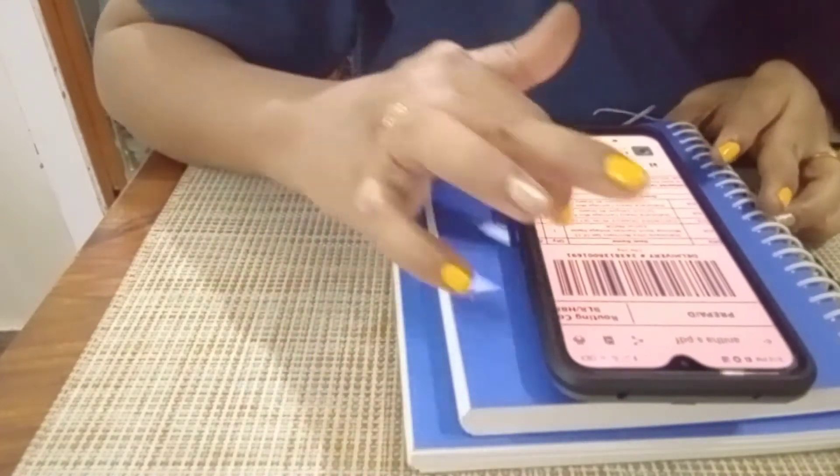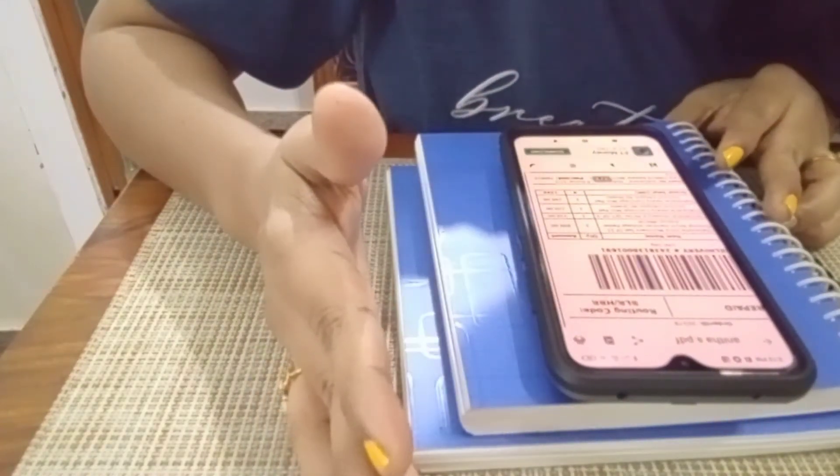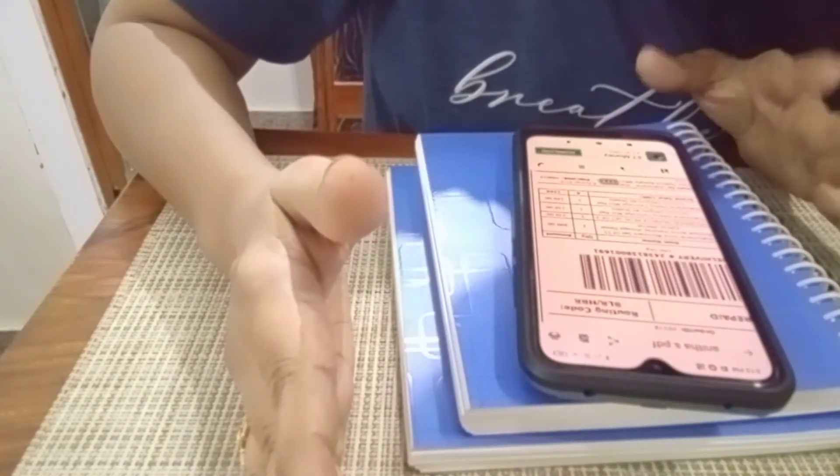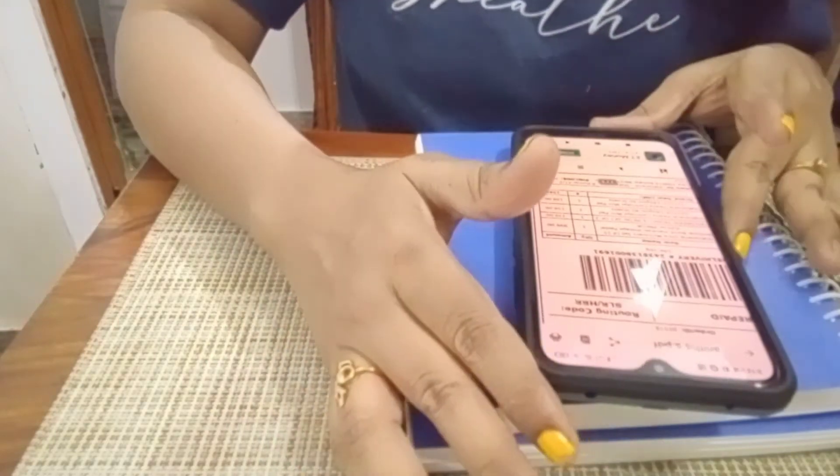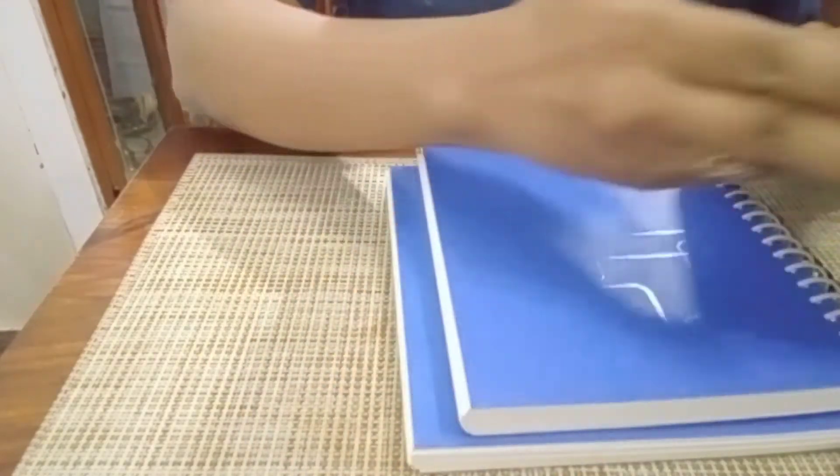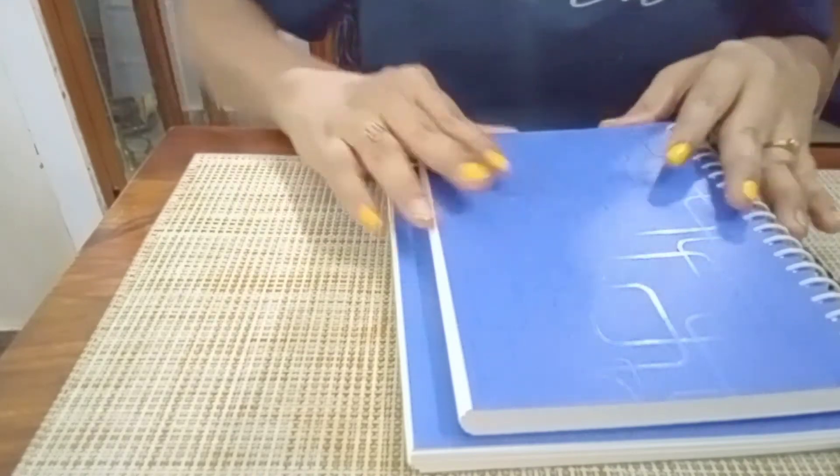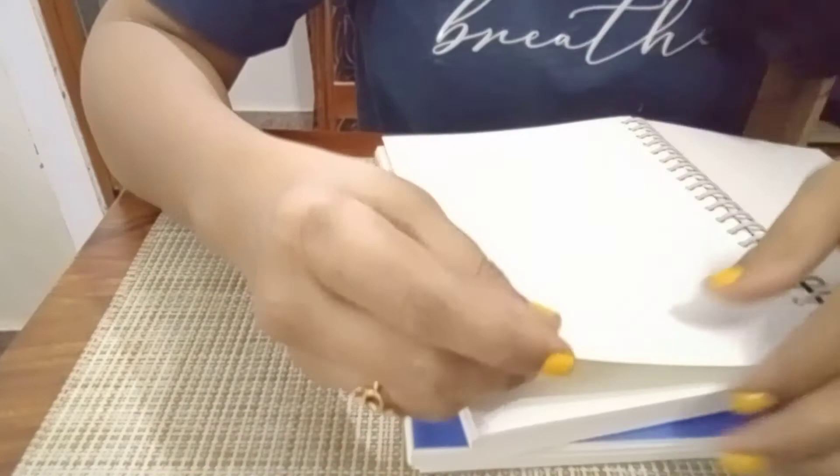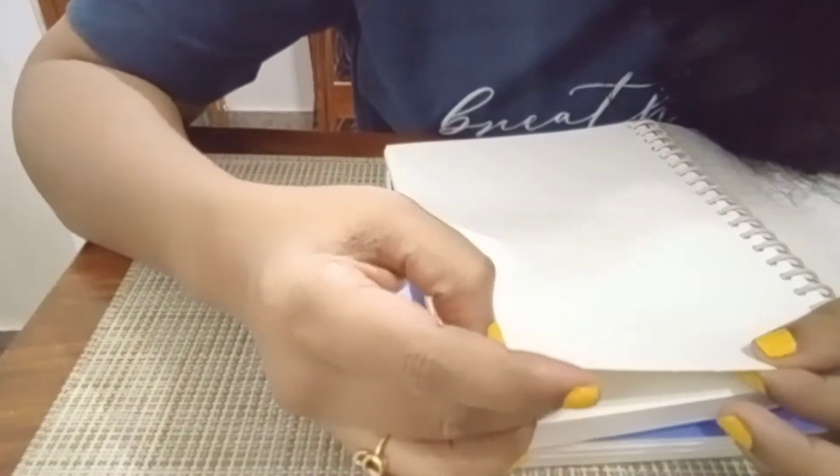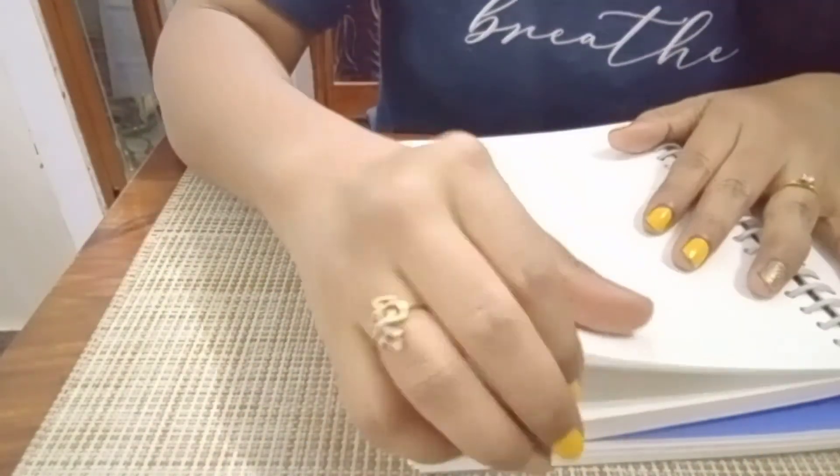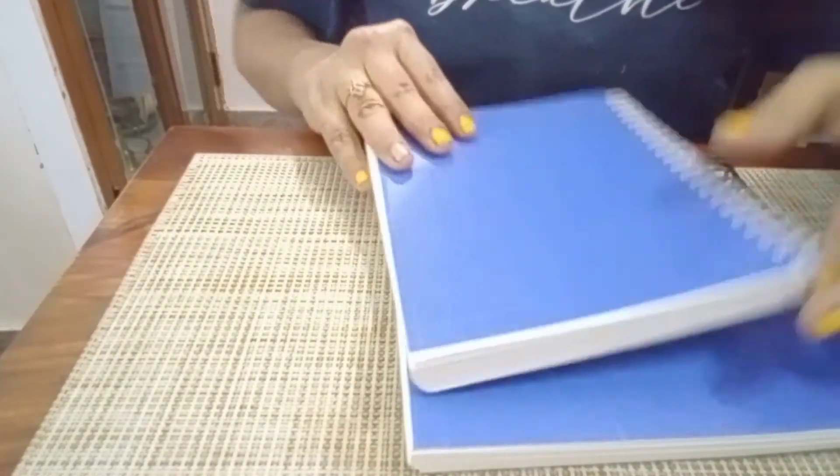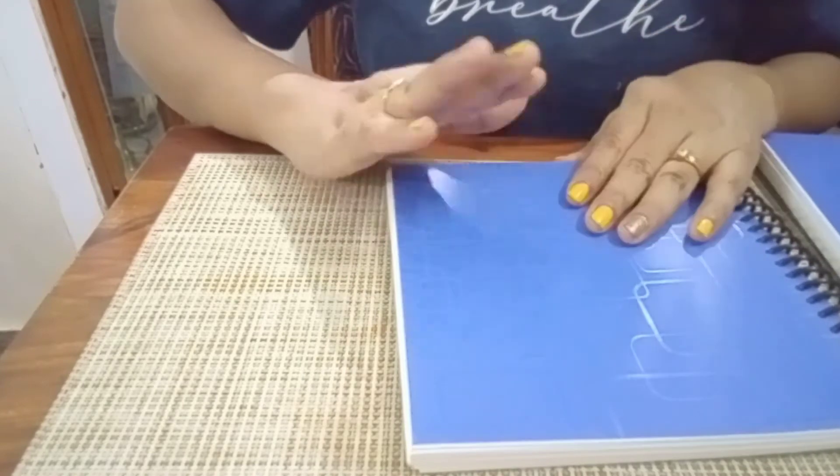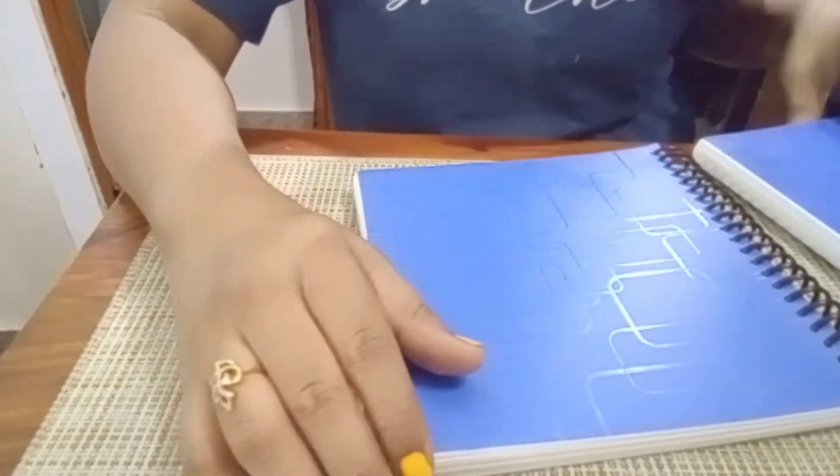These are the heavy cartridge watercolor sheets with all over texture, smooth finish. Here, 7 by 5 and 7 by 7, 40 sheets, I have watercolor sheets.